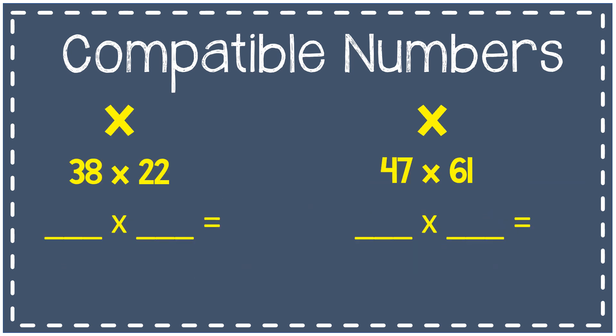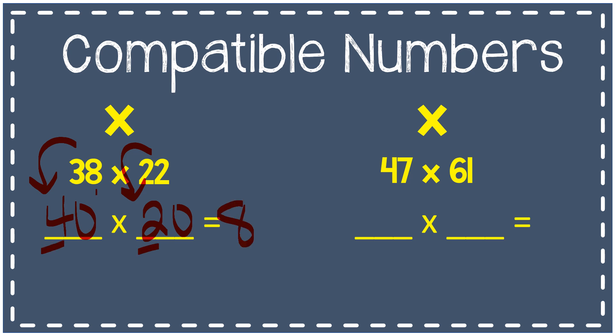Let's look at some multiplication examples. 38 times 22. I'm going to round 38 to the nearest ten: 40. I'll round 22 to the nearest ten: 20. Now I've made them compatible numbers and they're much easier to solve using mental math. 4 times 2 is 8, and I have a zero on 40 and a zero on 20, so I put those zeros at the end of my answer and I get 800. That's my answer, which is close to the exact answer.